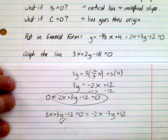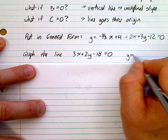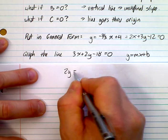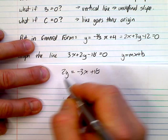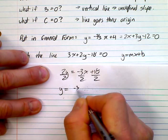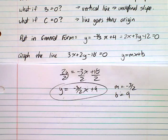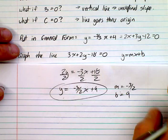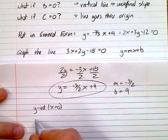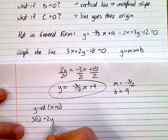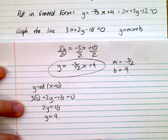Now let's graph the line 3x plus 2y minus 18 equals zero. One approach: rearrange into slope-intercept form. Move 3x and subtract 18: 2y equals negative 3x plus 18, then divide by 2 to get y equals negative three-halves x plus 9. Slope is negative three-halves and y-intercept is 9. Alternatively, use intercepts: set x equal to zero — 2y equals 18, so y equals 9. That's your y-intercept.